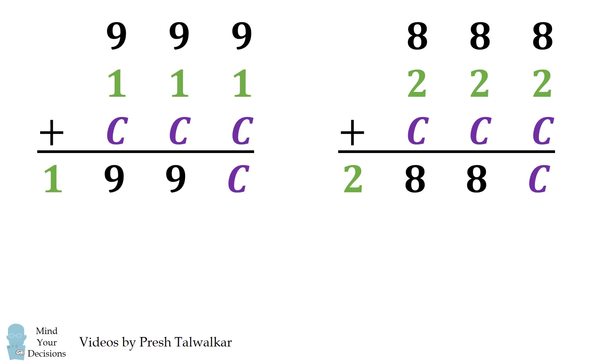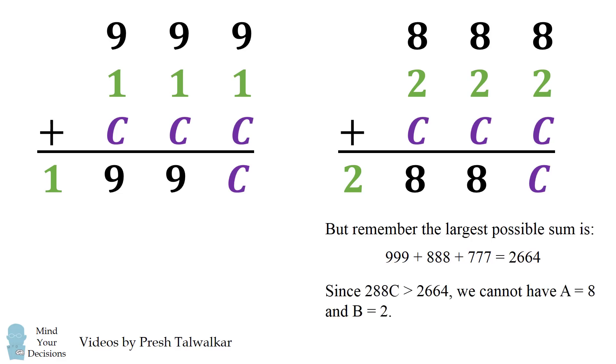So how can we figure out the value of C? Well, remember that the largest possible sum was 2664. If we have A equals 8 and B equals 2, we end up with a sum that's larger than 2800. But this is larger than the largest possible sum we could have. Therefore, we cannot have A equals 8 and B equals 2. So we can exclude this possibility.